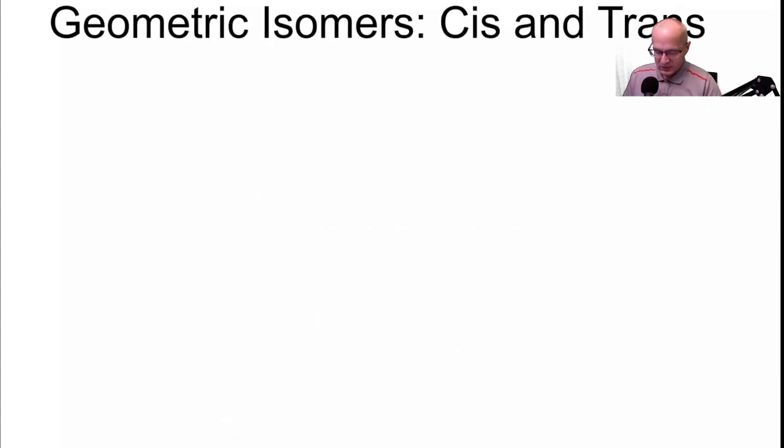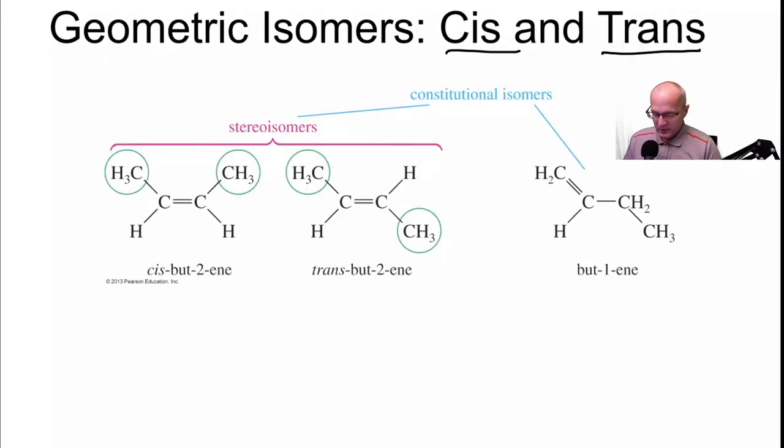Geometric isomers, cis and trans. Cis and trans. Let me get my face out of the way there. Now here we go. Take a look here. This molecule and this molecule are isomers of each other. They are stereoisomers because they differ in their orientation in three-dimensional space.